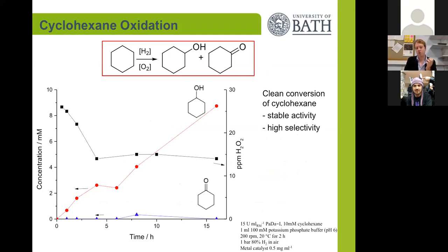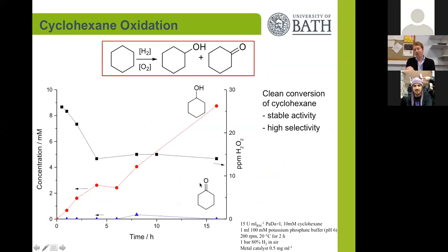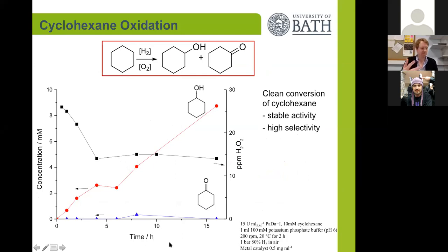This allowed us to run much longer reactions with these two catalyst systems combined. Starting from a 10 millimolar concentration of cyclohexane, we were able to generate cyclohexanol over 16 hours with very little over-oxidation, representing full conversion of the cyclohexane put into the reaction.